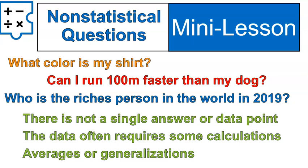Can I run 100 meters faster than my dog? This would be gathering two data points. I would run 100 meters, my dog would run 100 meters, and then you would say yes or no. Because the answer is so simple, it doesn't require any statistical analysis. Therefore, it is not a statistical question. You just need to gather two points of data and say yes or no.